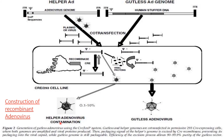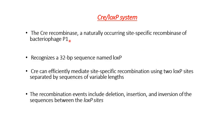If the helper adenovirus is able to package its DNA into the viral protein, it is considered contamination. This contamination will be only 0.1 to 10 percent, meaning 90 to 99.9 percent purity of the gutless vector can be achieved through this process. The Cre recombinase is a naturally occurring site-specific recombinase.